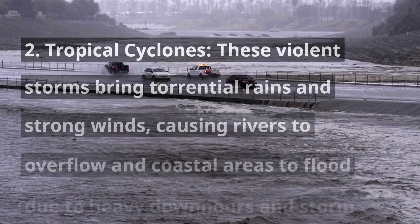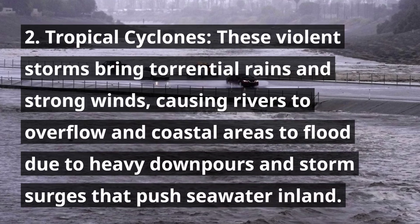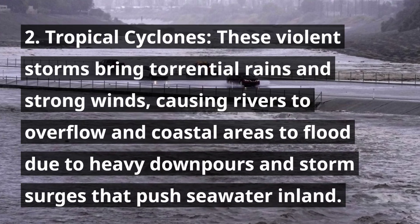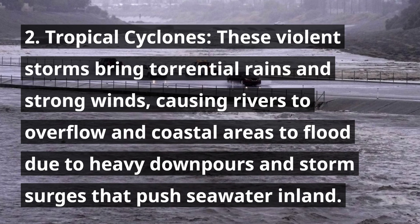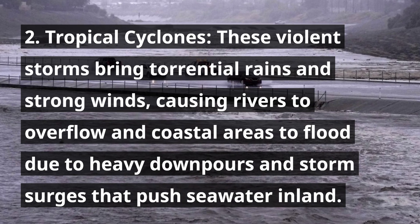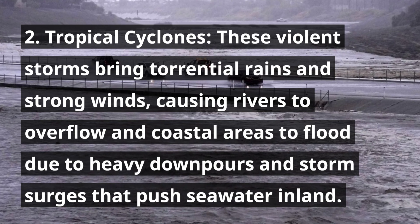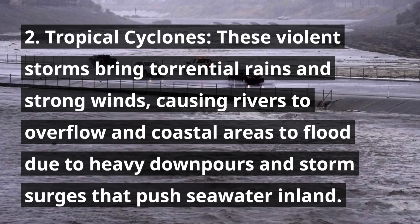2. Tropical Cyclones. These violent storms bring torrential rains and strong winds, causing rivers to overflow and coastal areas to flood due to heavy downpours and storm surges that push seawater inland.